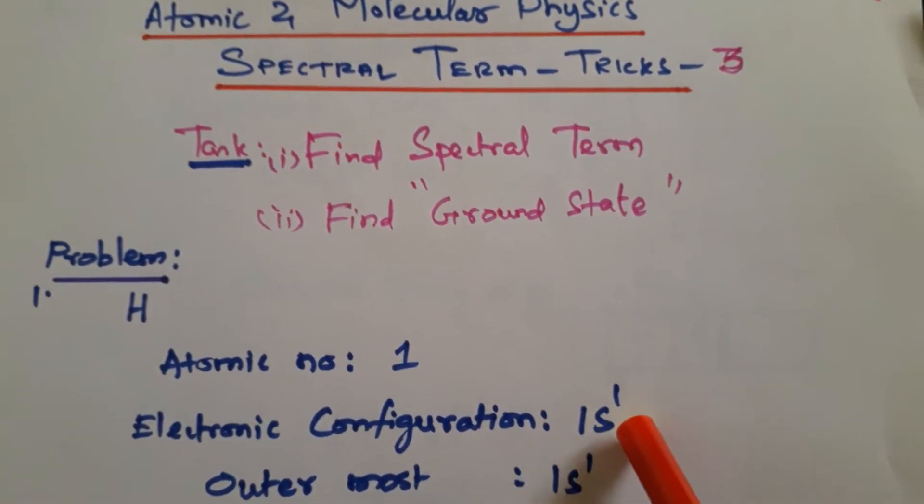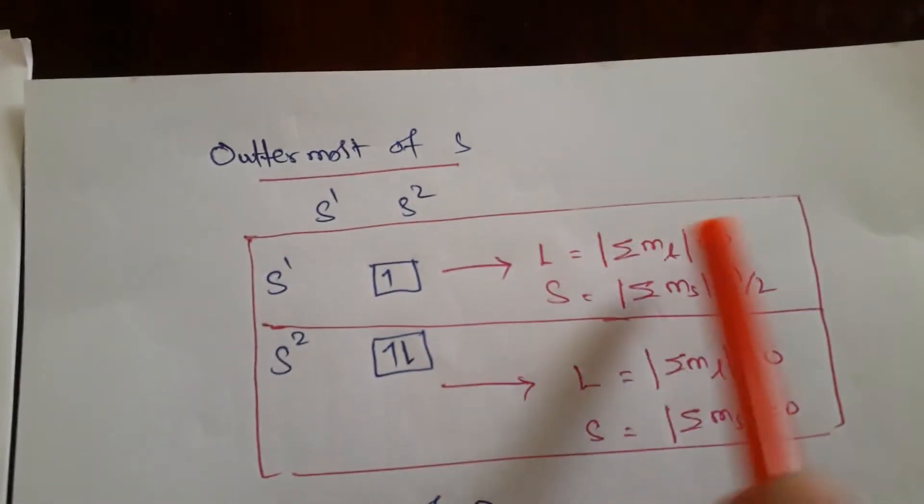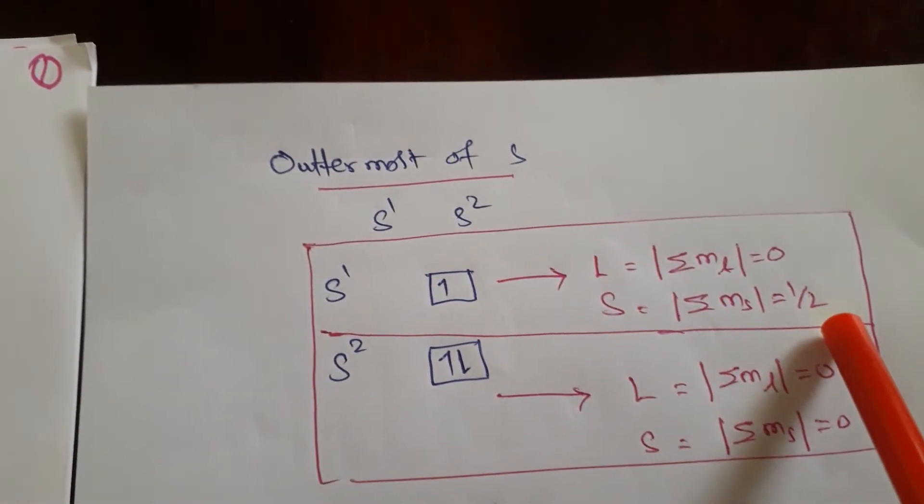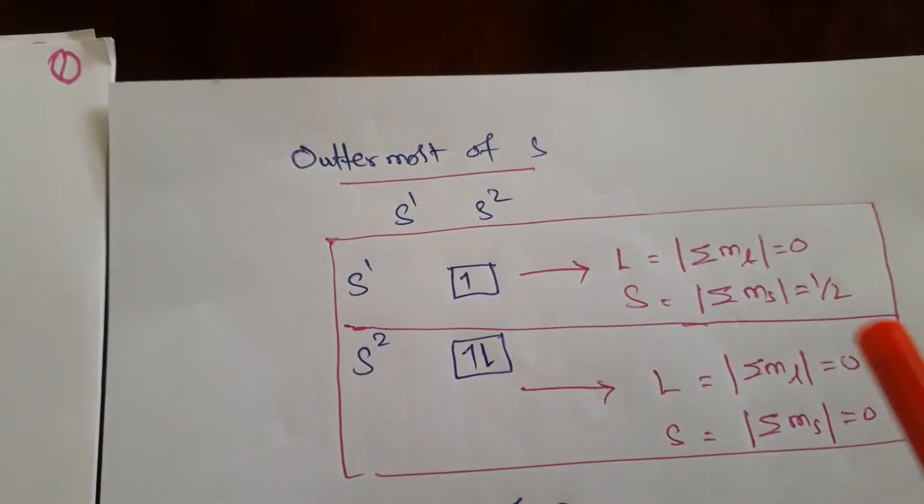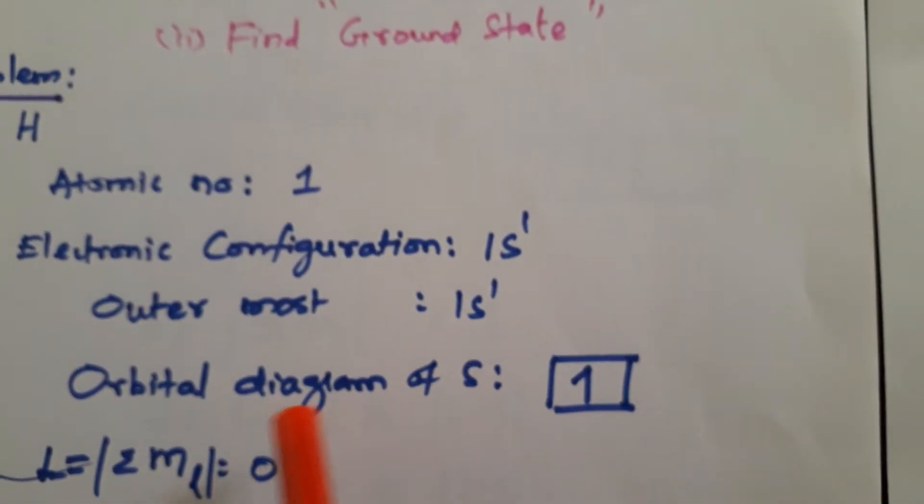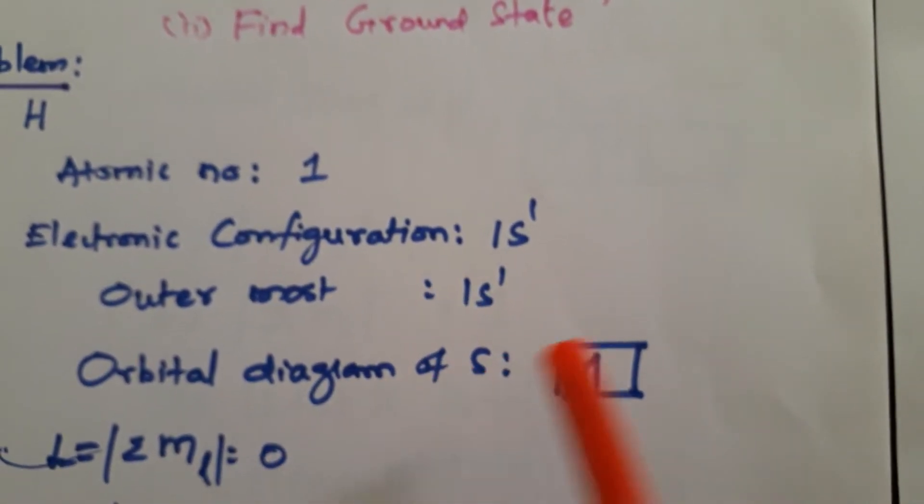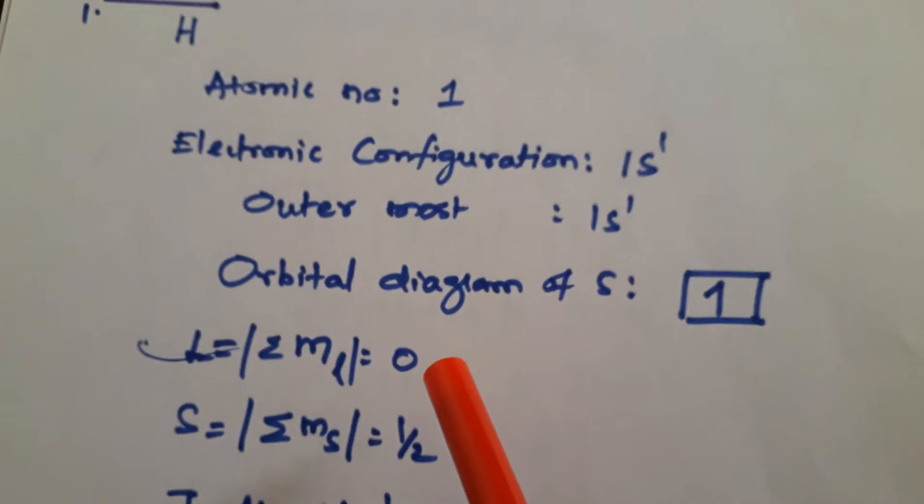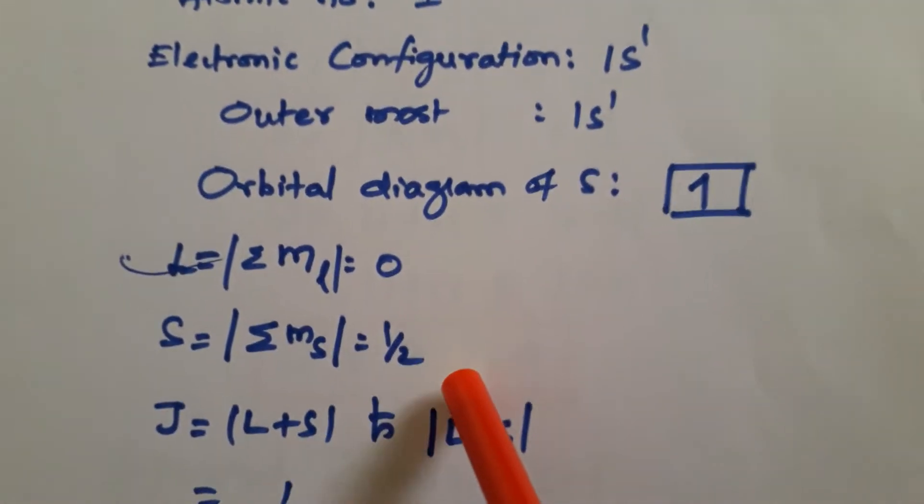As you know, if it is s1, that L value is 0 and S value is 1/2. You have seen our previous video itself. So I have taken this outermost is 1, orbital diagram based on this. L value we have taken this and S value.